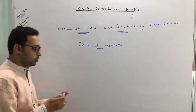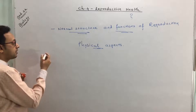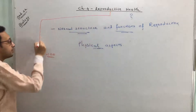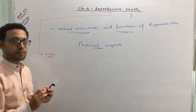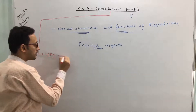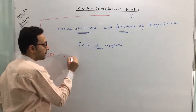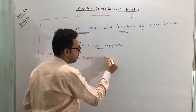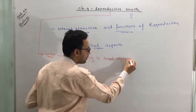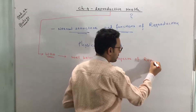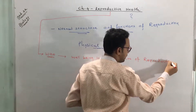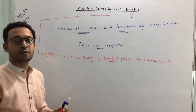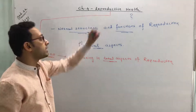According to WHO, the definition has been revised. According to WHO, reproductive health means well-being in total aspects of reproduction. Remember: total aspects, all aspects of reproduction — this is called reproductive health.